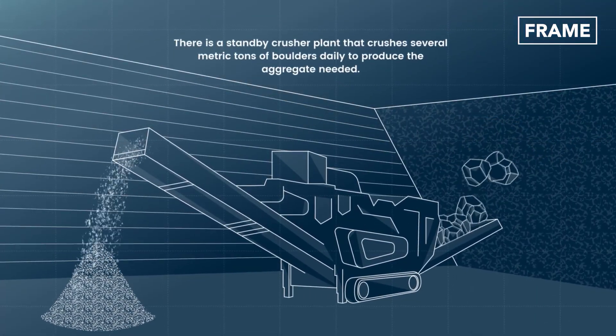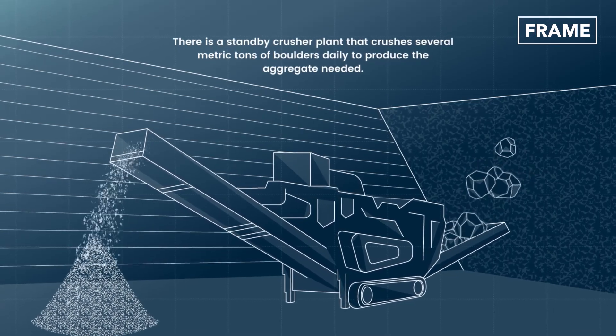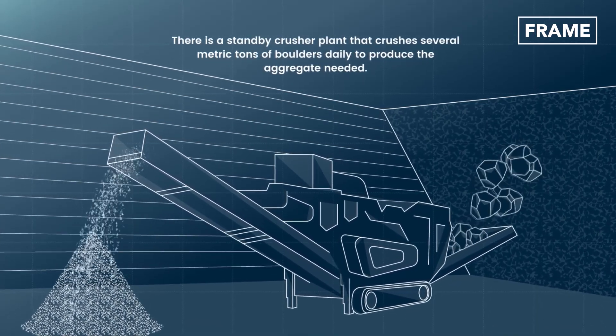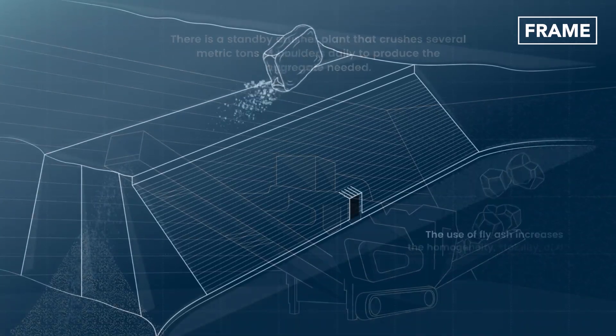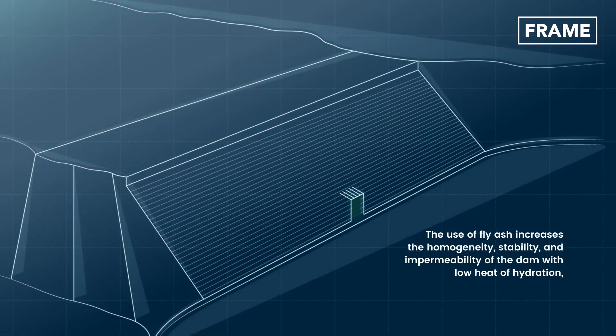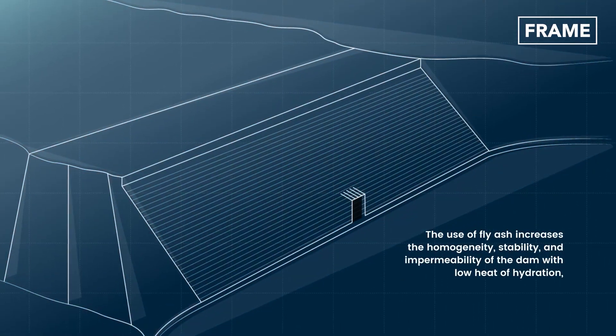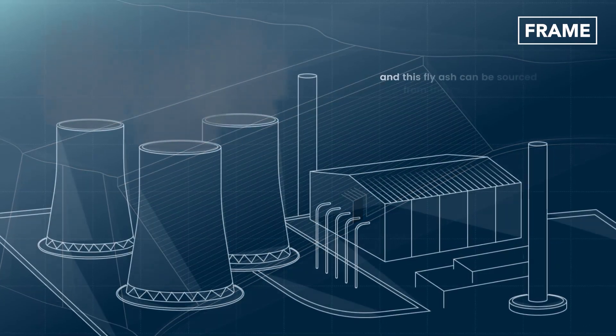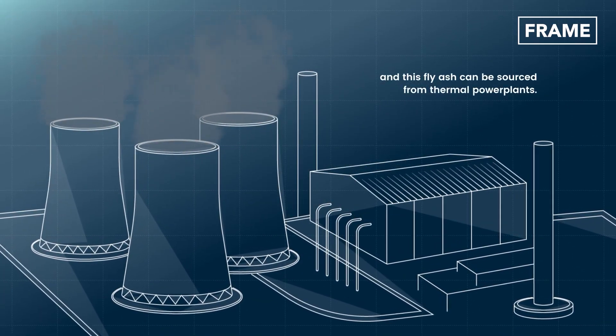There's a standby crusher plant that crushes several metric tons of boulders daily to produce the aggregate needed. The use of fly ash increases the homogeneity, stability, and impermeability of the dam with low heat of hydration. And this fly ash can be sourced from thermal power plants.